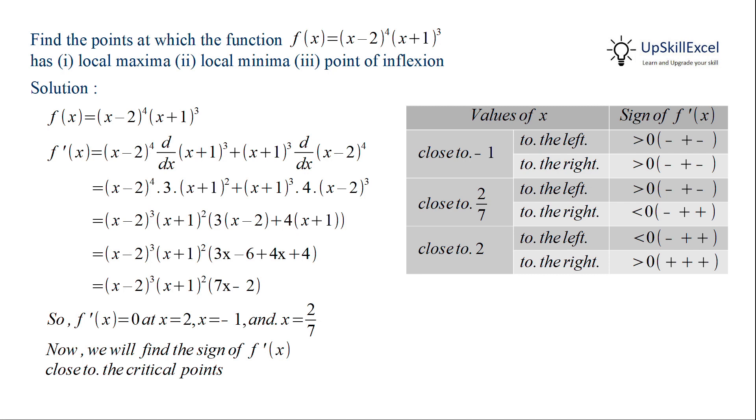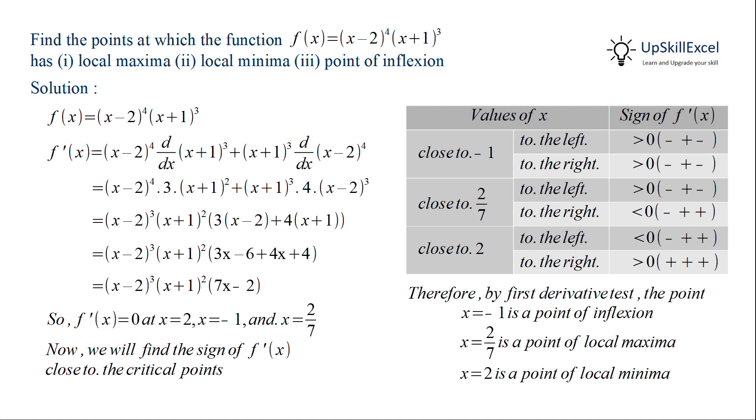Hence from the table, we observe that at x = 2/7, the sign changes from positive to negative. Hence it's a point of local maxima.